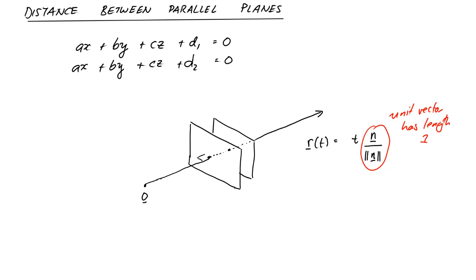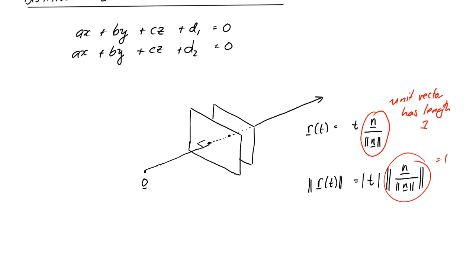So we can write that down as well. The length, therefore, for a given value of t, just equals t absolute value, because the length of this one is just equal to 1. Remember, whenever we take a scalar outside of a length, we always take the absolute value. Taking the length of a vector will always give us a number.